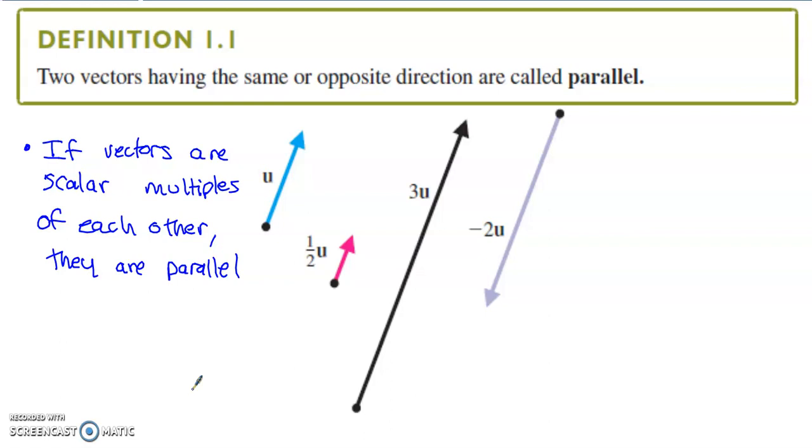You know what parallel lines are. The difference between parallel lines and parallel vectors is that a vector only travels one direction, while a line travels infinitely in both directions. If you look at this combination of vectors here, we've got vector u, one-half times vector u, three times vector u, and negative two times vector u. All four of these vectors are parallel to one another.